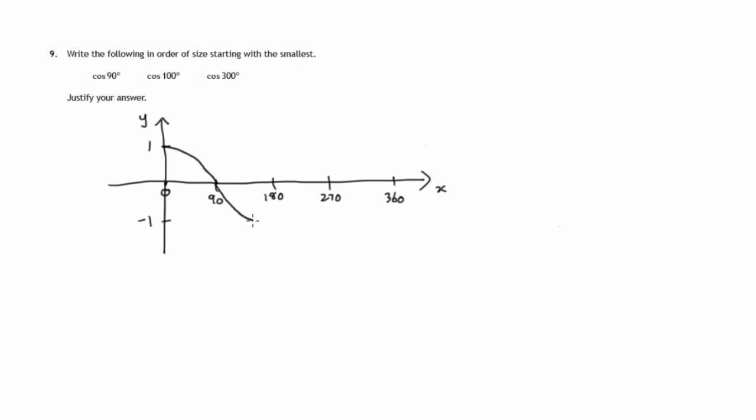They continue to get smaller till we reach minimum value of negative 1, cos 180. They then start to increase again, back up to 0 for cosine of 270, and then still increasing back up to 1 for cosine of 360.